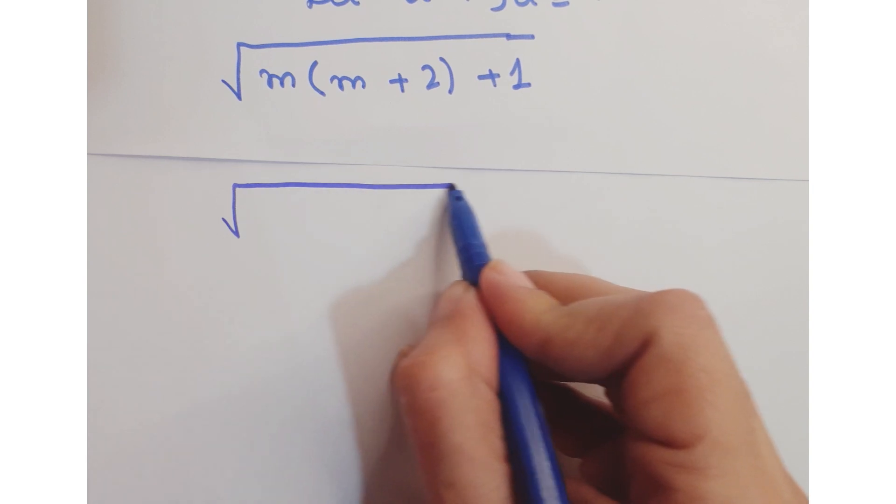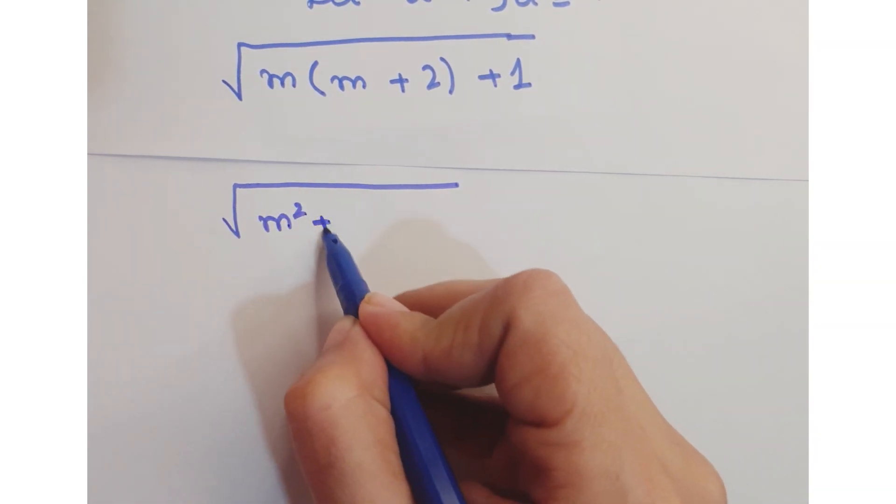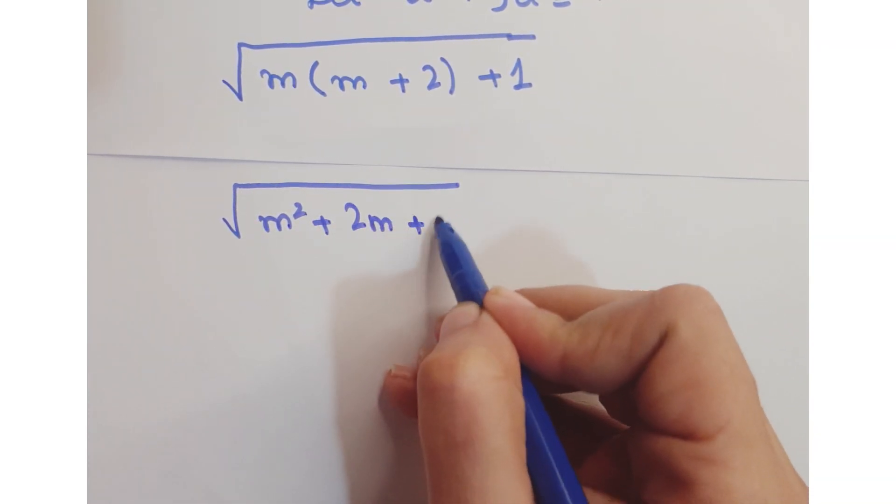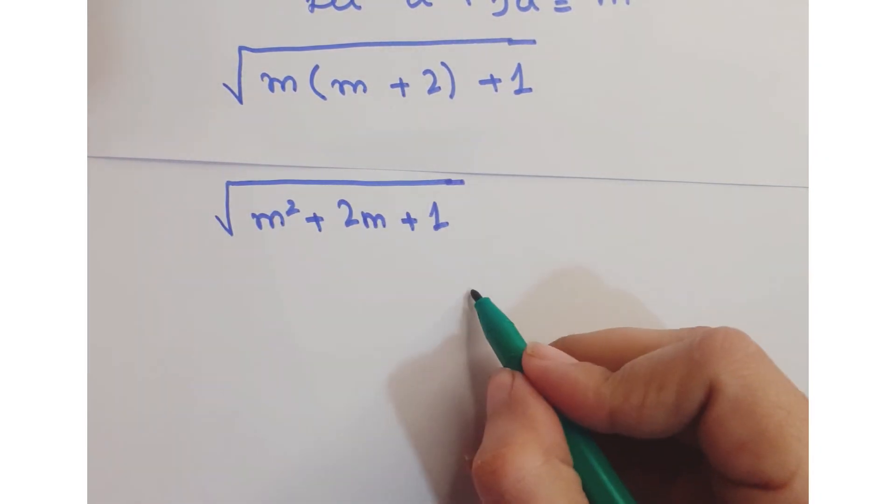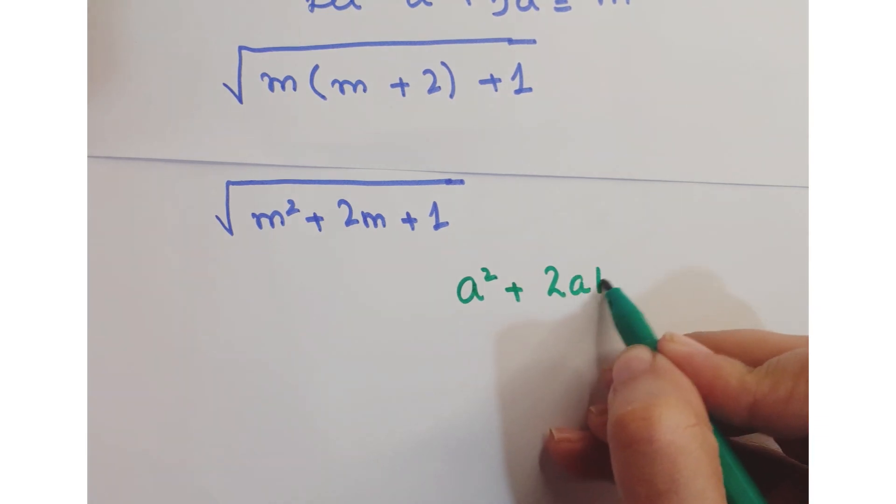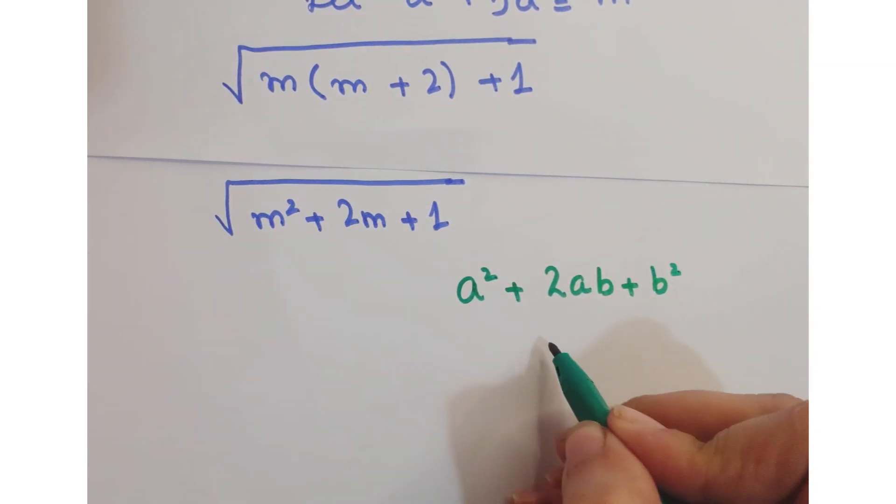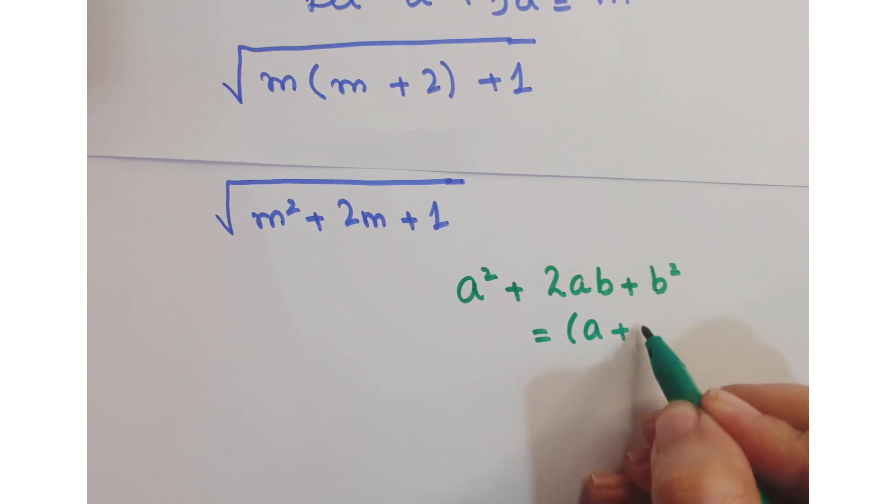Further, you can write it as m squared plus 2m plus 1. Now, as you know, the algebraic identity that is a squared plus 2ab plus b squared equals (a plus b) squared.